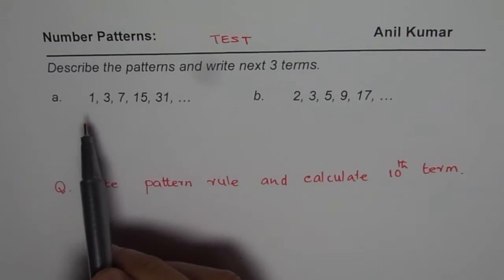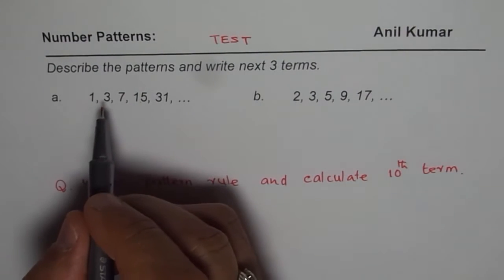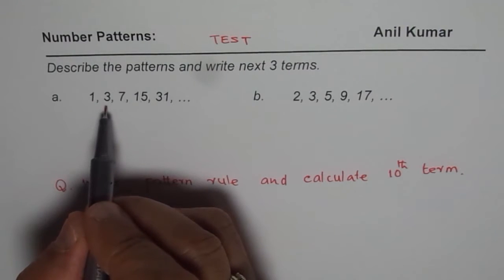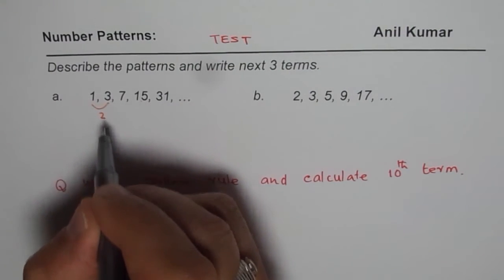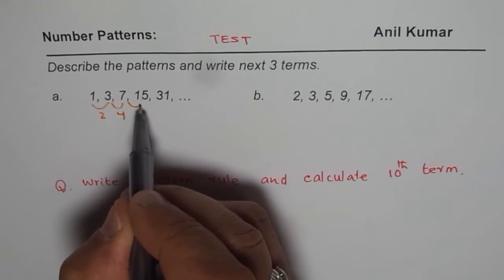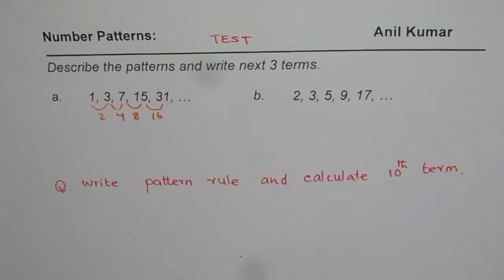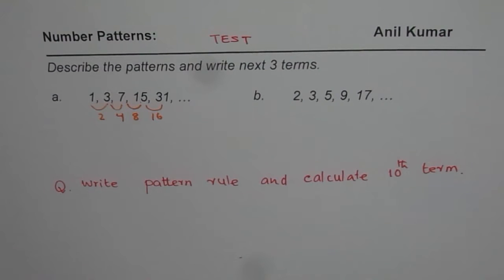The first one is 1, 3, 7, 15, 31. If we take a difference: 3 minus 1 is 2, then 7 minus 3 is 4, and then it is 8, and then we add 16 to get the next term. So we are not adding a constant number. In fact, the numbers which we are adding are getting multiplied by 2. Do you see that? So that should tell you what the pattern rule is.